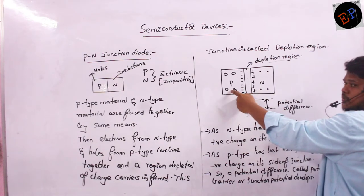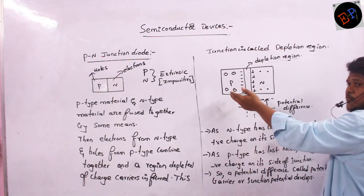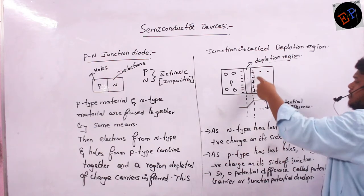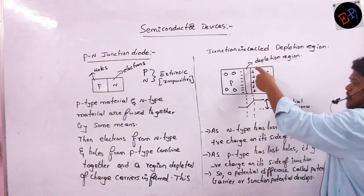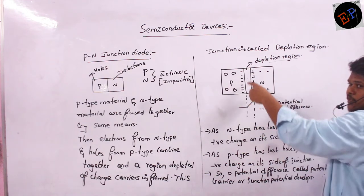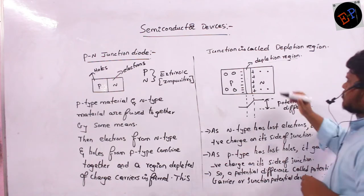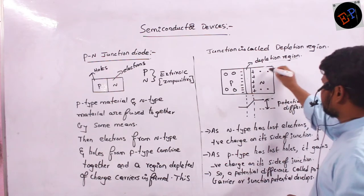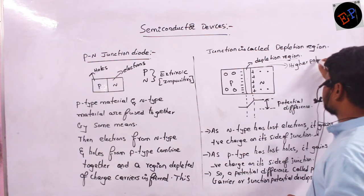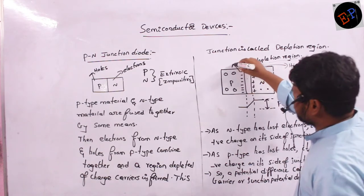And in the P-type, the majority charge carriers are holes. The P-type has lost positive charge. So what kind of charge will it develop? Negative charge. Therefore, on the N-type you can see positive charge developed on the side of the depletion region, and on the other side of the depletion region, negative charge is developed. Positive charge is nothing but higher potential, and negative charge is nothing but lower potential.